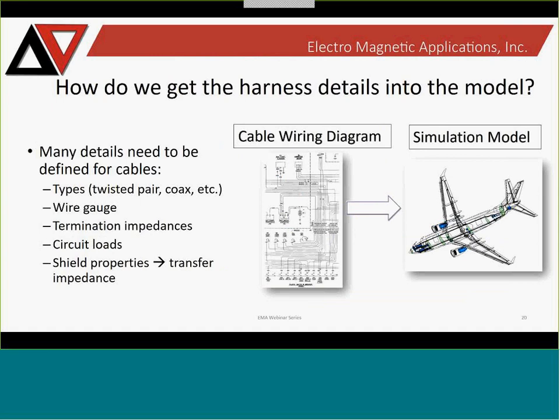Once you have your routing geometrically represented, you need to assign appropriate details to your cables. The types of information needed include the type of wire — shielded twisted pair, coax, or unshielded — the gauge of the wire, transfer impedances, and circuit loads. For ATL analysis, you're often looking at the worst case: open circuit voltage or short circuit current. In these cases, we ignore actual circuit loads and either short the cable on both ends or short one end and leave the other open to determine short circuit current and open circuit voltage. You also need shield properties and transfer impedance associated with the shields you're using.